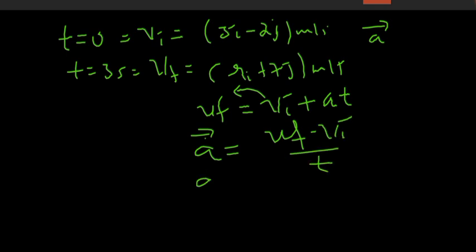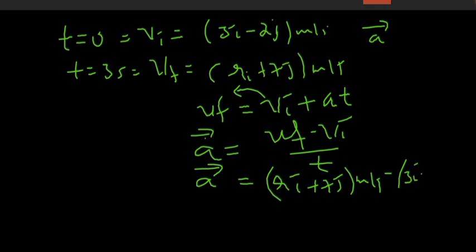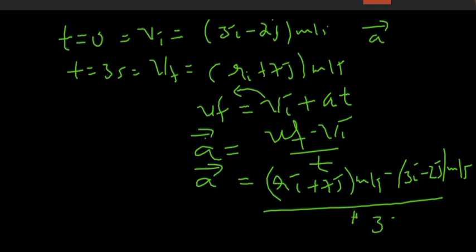Acceleration is equal to v final: 9i plus 7j meter per second, minus v initial: 3i minus 2j meter per second, divided by time t. t is equal to 3 seconds — from initial t equals zero to final t equals 3 seconds.